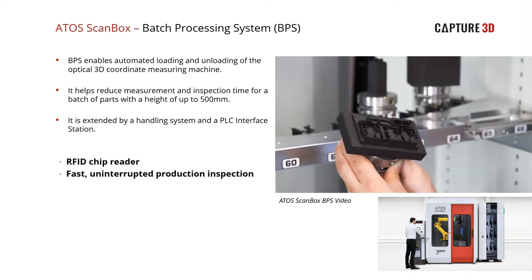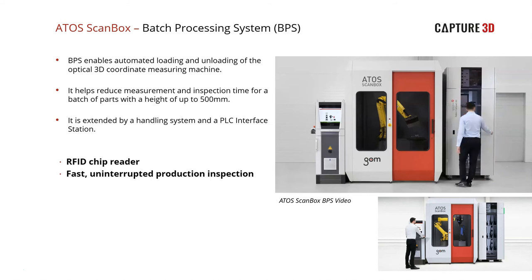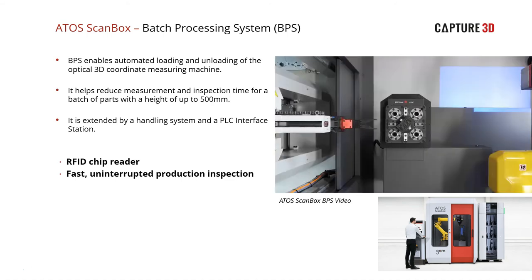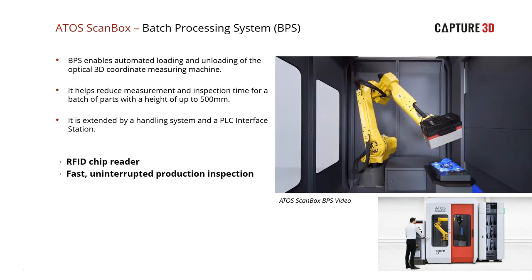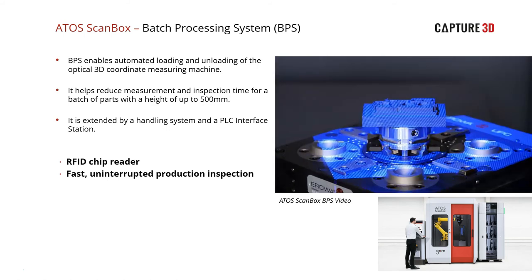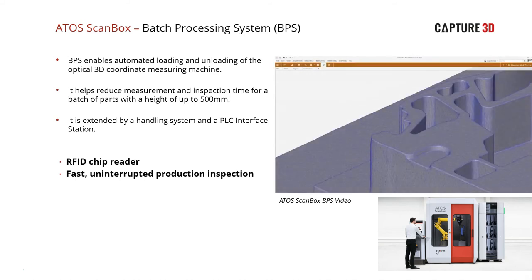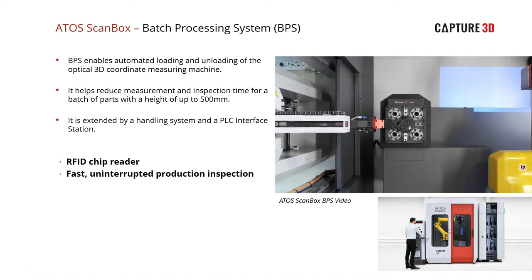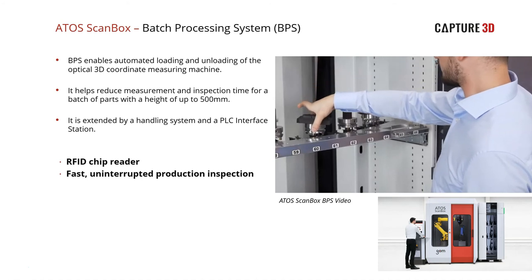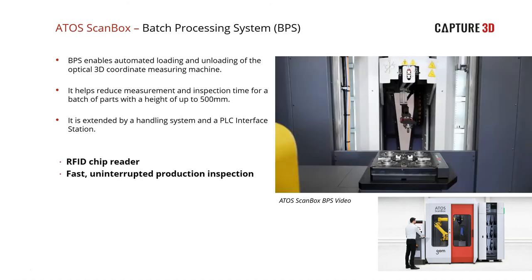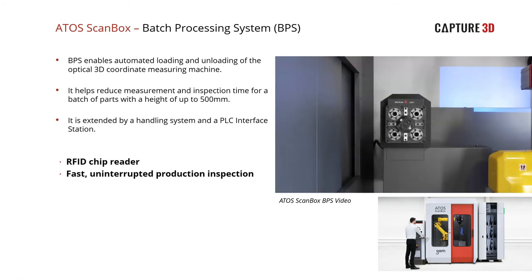For even greater throughput, repeatability, and faster cycle times, there's the BPS — batch processing system. This allows processing large batches of parts at a time versus just one fixture. The cabinet can be loaded completely and is set up with pneumatics to transfer part loading and unloading into the 5108. As a shift operation, an operator loads the cabinet, programs in the part number — each one tracked with an RFID — hits go, and leaves for their shift. The next shift comes in, the entire cabinet has already been inspected, and all reports are ready. They remove those parts, load the next batch, and repeat. It's also great for trend analysis to see how parts are wearing or if there's an issue downstream.